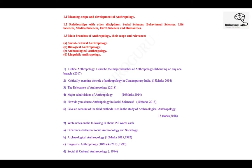Looking at the first three units discussed in our first session: the first was on the meaning, scope and development of anthropology; the next was the relationship of anthropology with different disciplines; and the third was the branches. These three topics are interrelated to each other. Now look at the questions — in 2017, UPSC asked about defining anthropology and describing the major branches, along with elaborating any one of them. You can use information from all three topics.